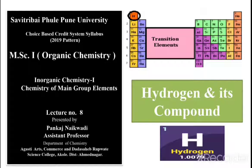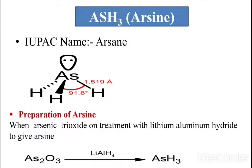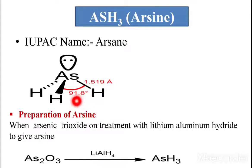In the previous lecture we discussed phosphine and stibine compounds. In today's lecture we start the remaining part of hydrogen and its compounds, that is arsene. The IUPAC name of this compound is arsene, and the bond angle is about 91.8 degrees.